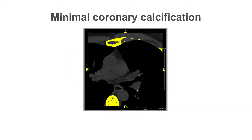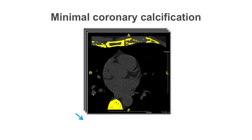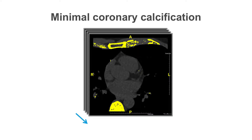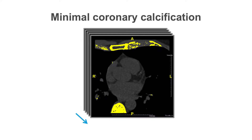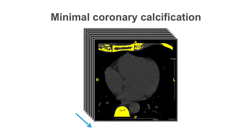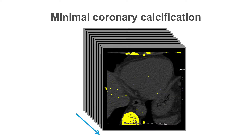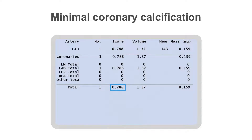Fortunately, every CT workstation has software that is able to calculate the coronary calcium score using this technique automatically. All that is required from the operator is to mark the calcified plaque within the coronary arteries. In this example, the software colour-codes anything with a Hounsfield unit score above 130, which represents calcium. There is only a tiny amount of calcium in the proximal LAD segment, and the total coronary calcium score was 0.8 Agatston units.